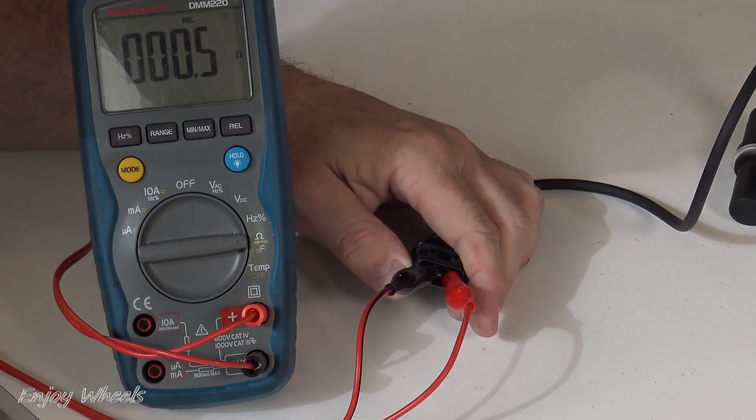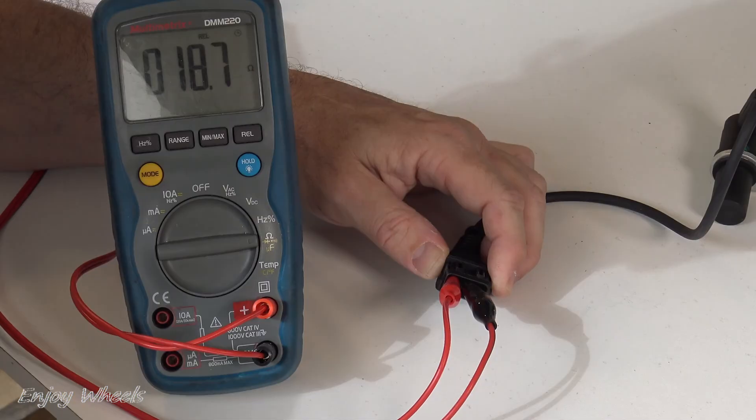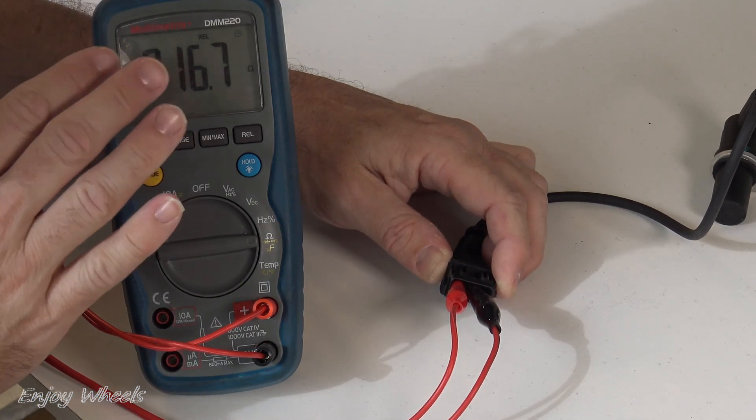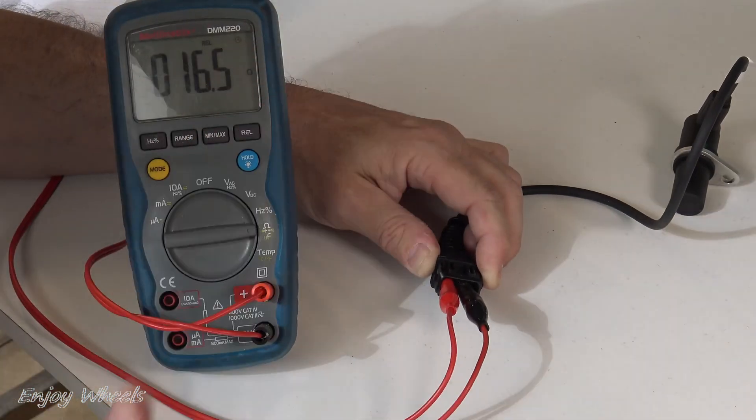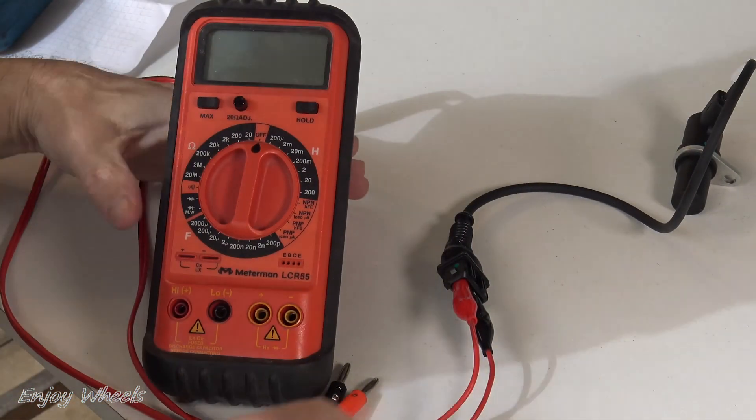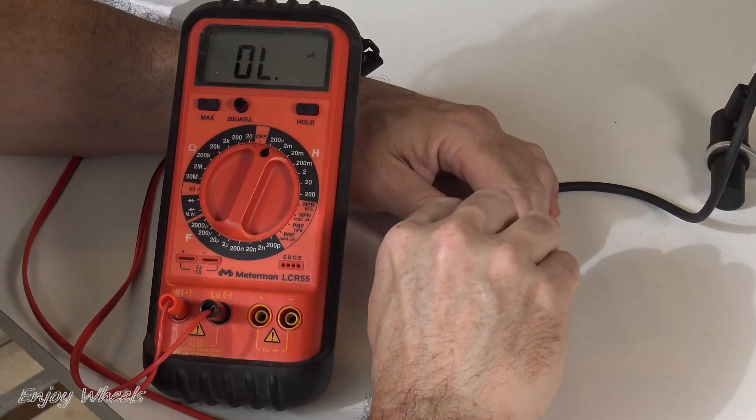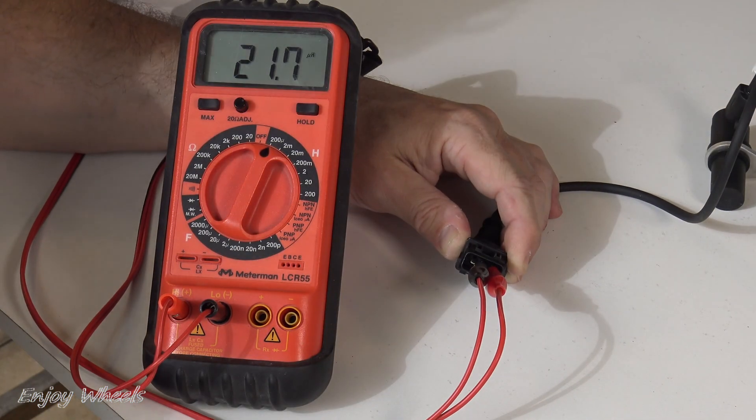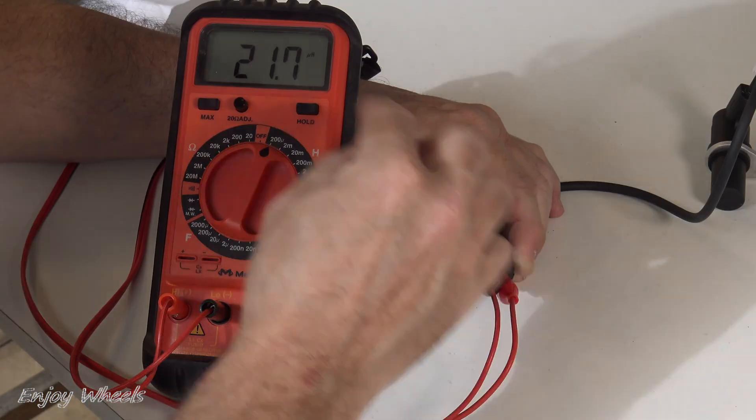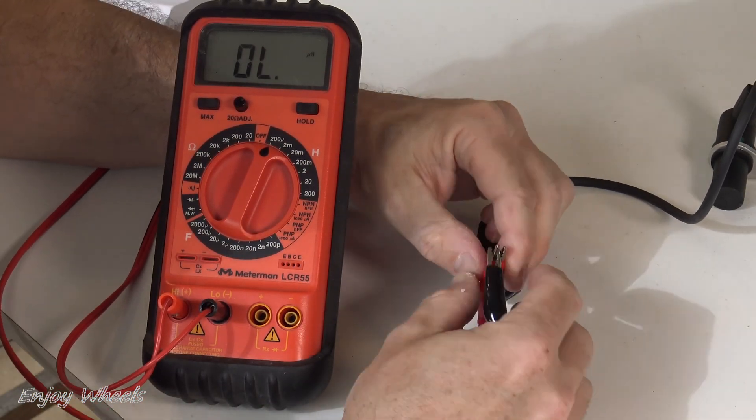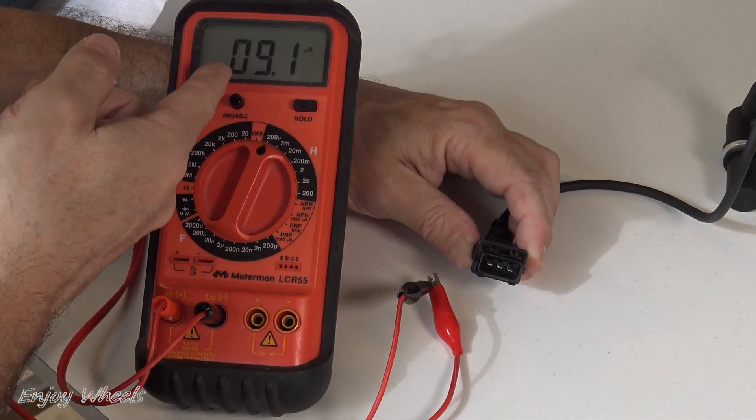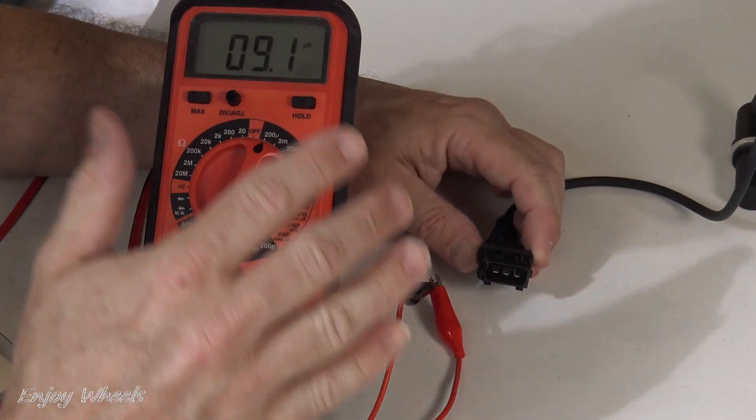Then I measure the resistance of the secondary winding. And we have a little less than 17 ohms. For the curious, I also measure inductance values. I replace the multimeter with the LCR meter. I reconnect to the primary. I read about 22 microhenries. But since my LCR meter doesn't have a relative mode, I have to subtract the inductance value from the measurement cables. I connect the two cables, and I read 9 microhenries. So the value of the primary inductance is 22 minus 9 or approximately 13 microhenries.